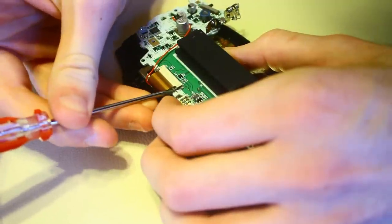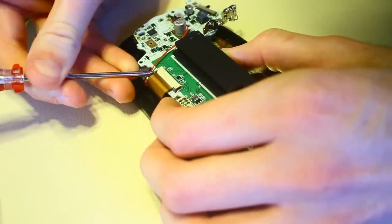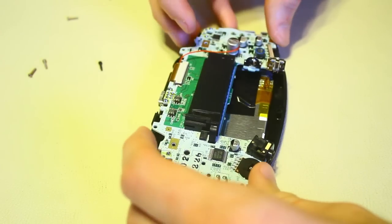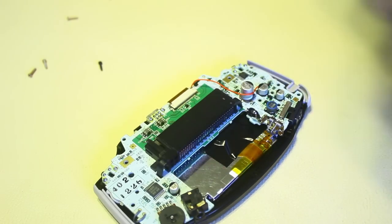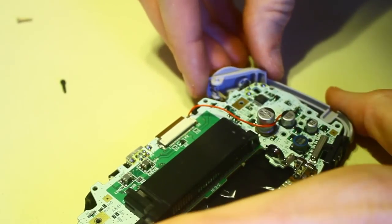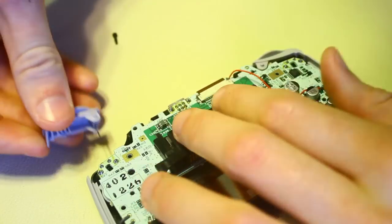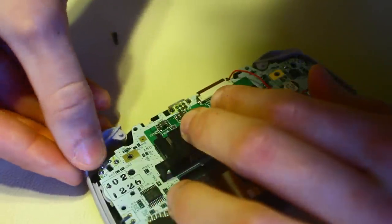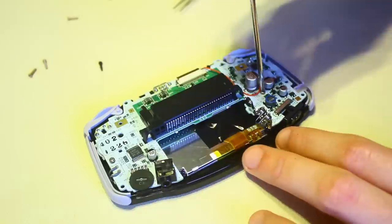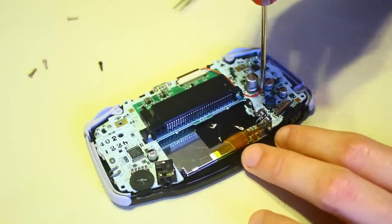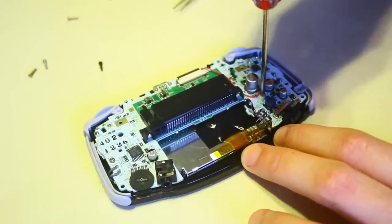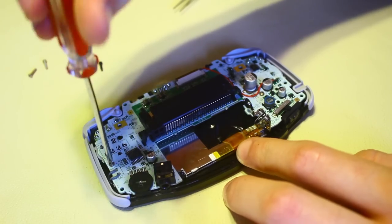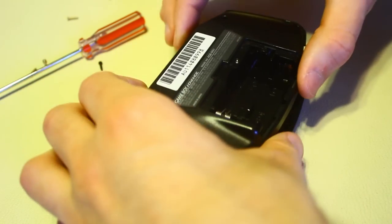Once those are all back in, make sure and connect the ribbon cable back to the motherboard. Secure the motherboard back down with the two Phillips screws and secure back down the back panel.